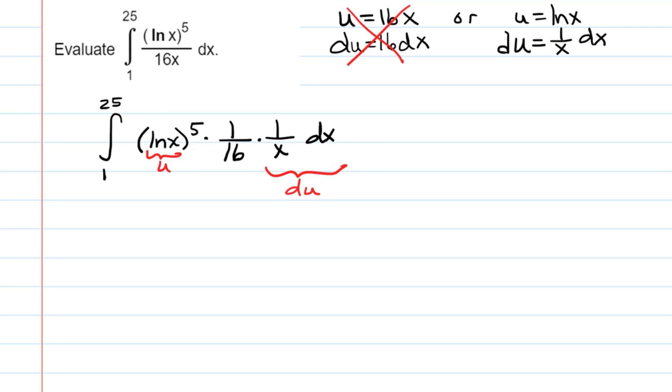The only other thing I need to worry about is remember that since this is a dx integral, these are x values. In fact, I like to write, remind myself, these are x values by writing x right here. If I'm going to change this to all u's, it doesn't make sense to have bounds that are x's. So let's figure out when x is equal to 1, what would u be equal to? It would be the natural log of 1, which is going to be 0. And when x is equal to 25, u would be equal to the natural log of 25.